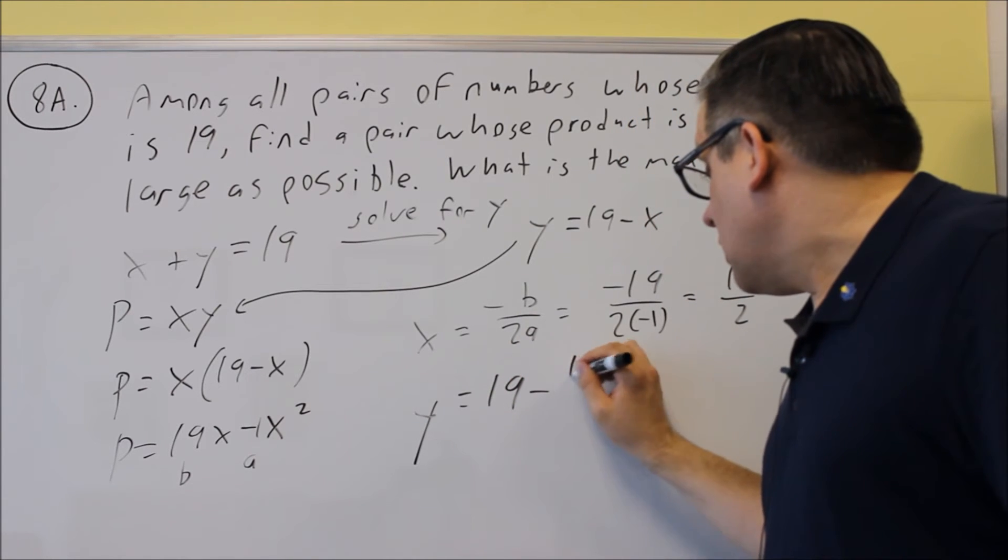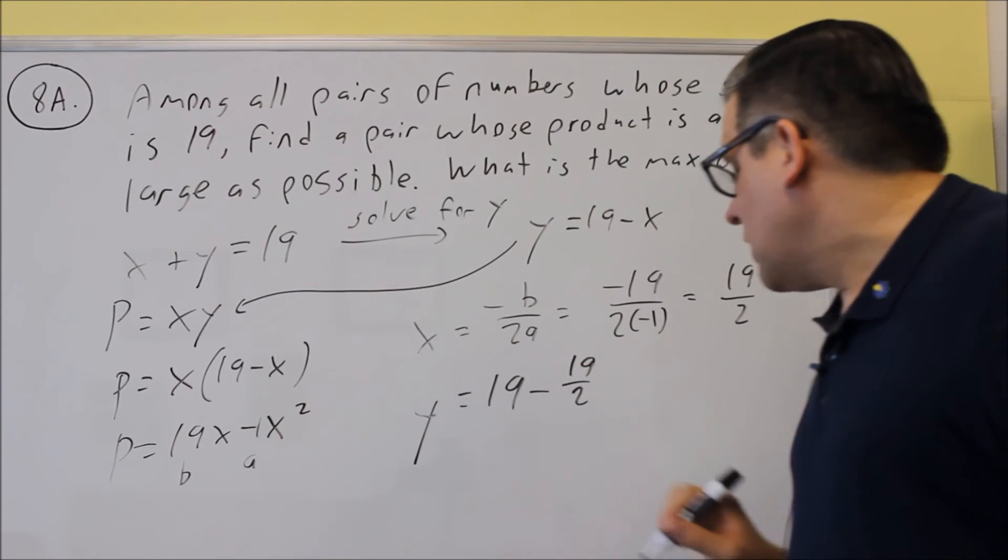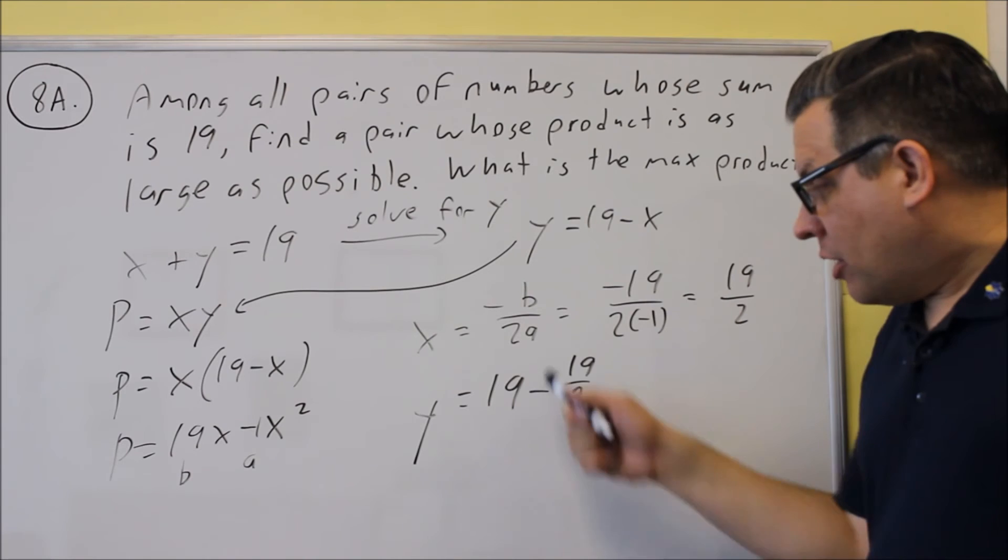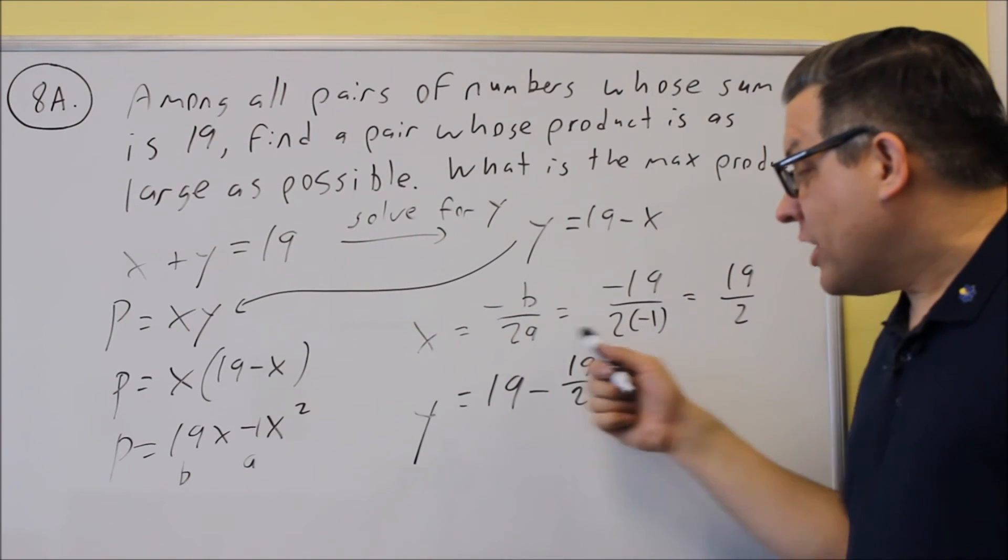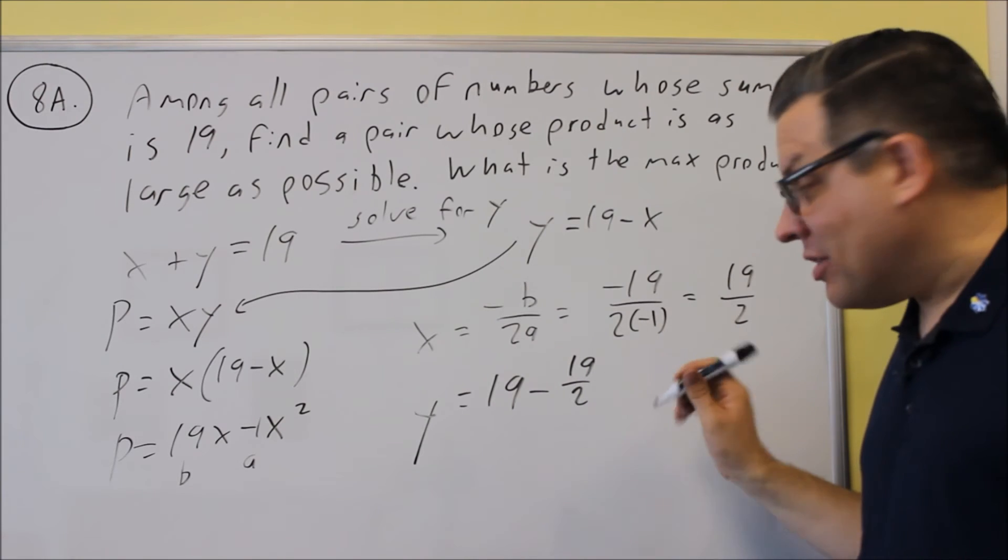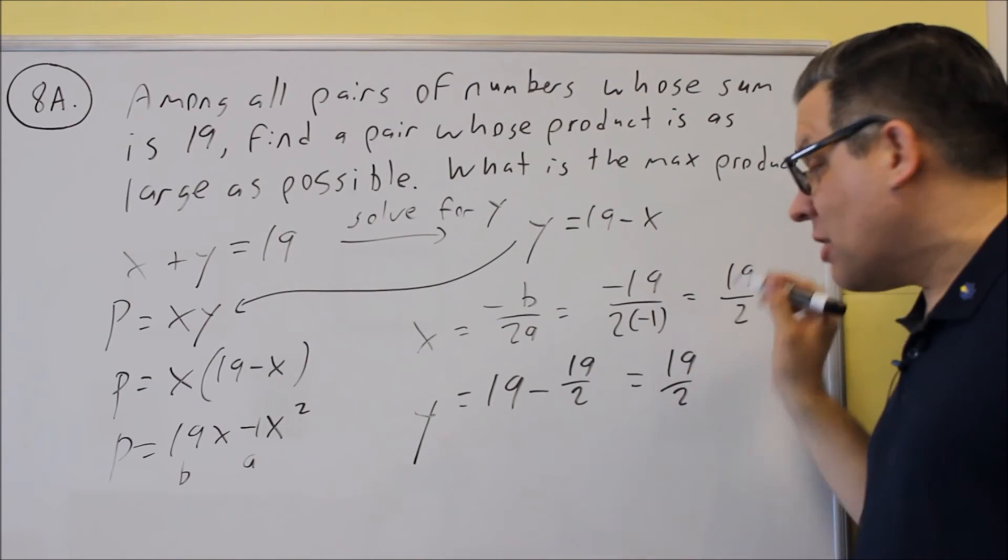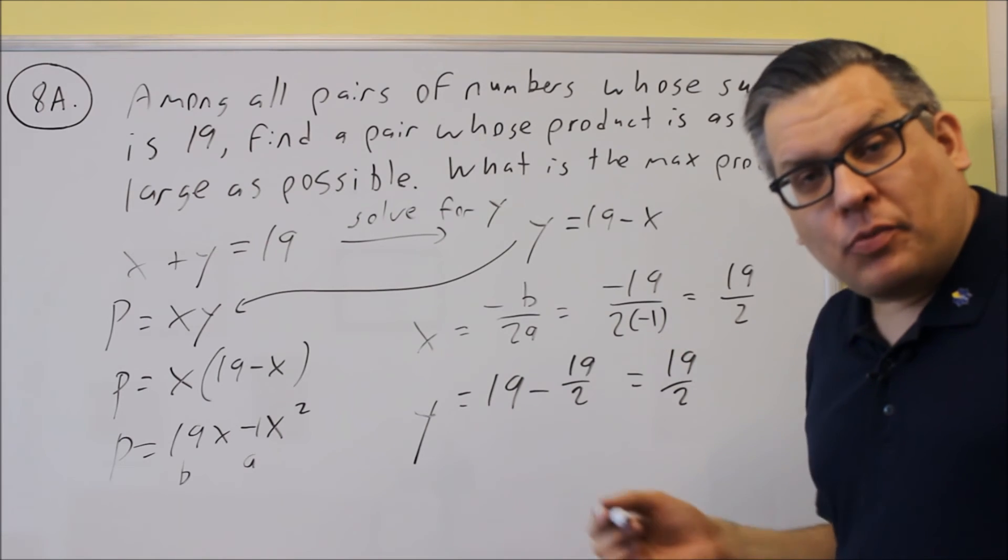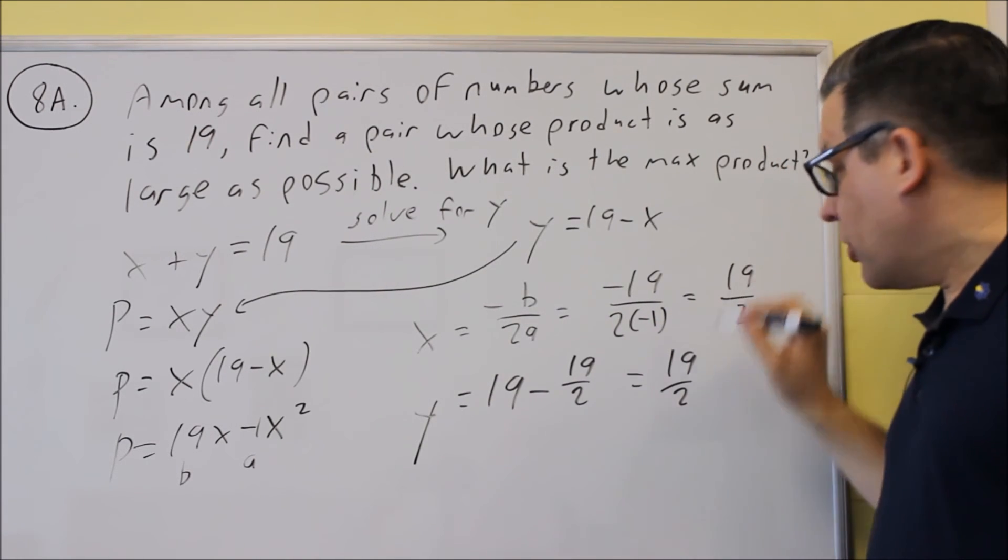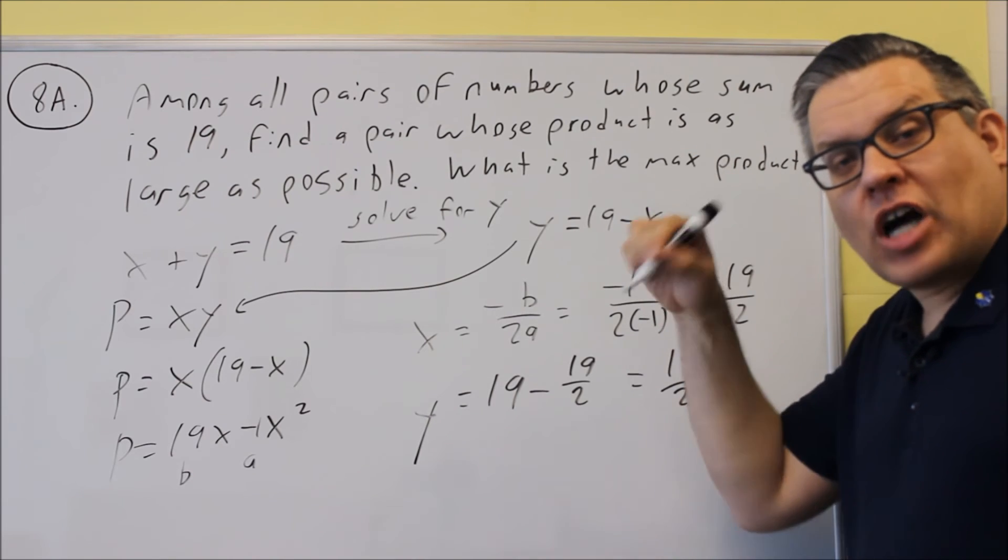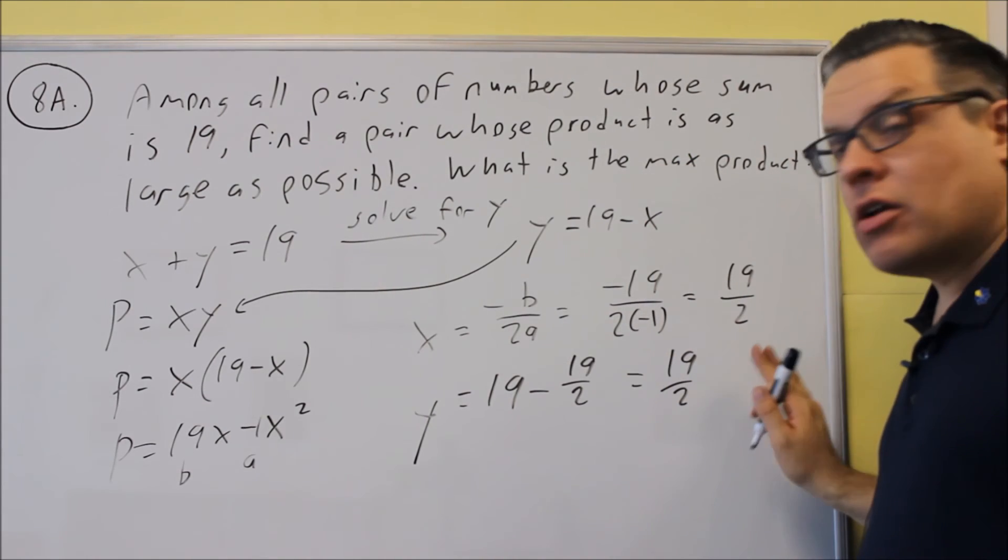So I'm going to do 19 minus 19 halves. And if we multiply top and bottom by 2, I'll get 38 halves minus 19 halves. That's going to also give me 19 halves. So it just so happens that both of these numbers happen to be the same. So on the line in the test that says pair, you would just put down 19 over 2 comma 19 over 2. You'd put that down on that line.